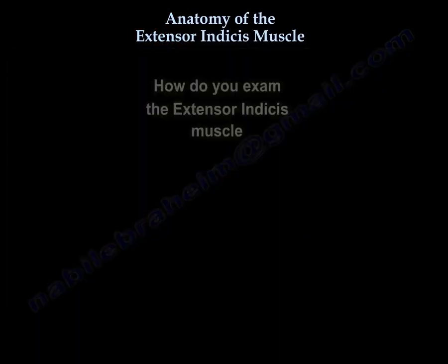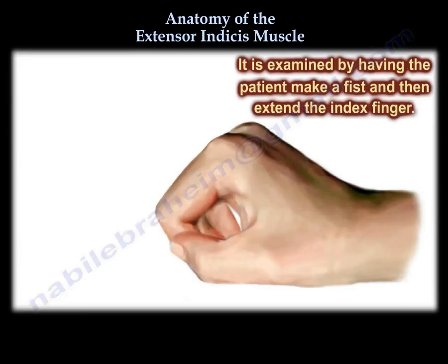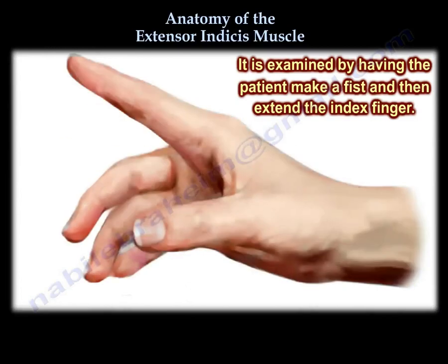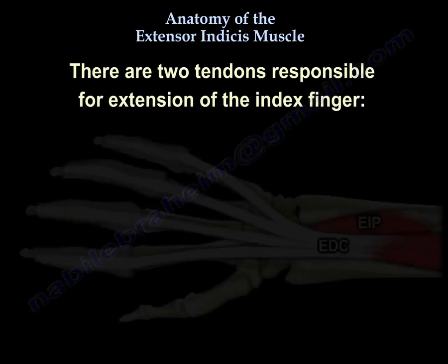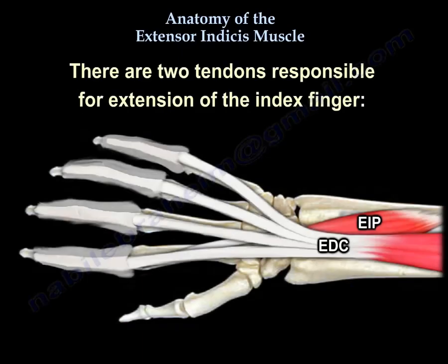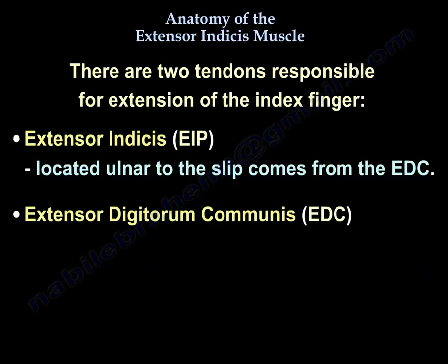To examine the extensor indices muscle, have the patient make a fist and then extend the index finger. The index finger has two tendons that extend it: the extensor indices, which is ulnar to the slip that comes from the extensor digitorum. So there are two tendons for the index finger.